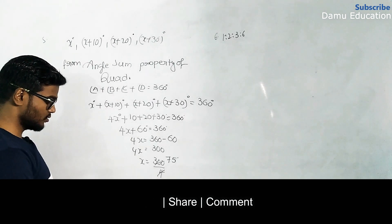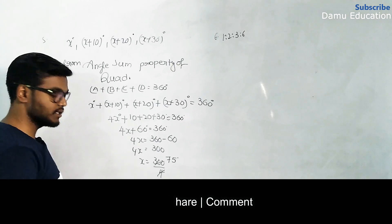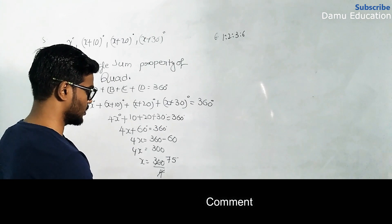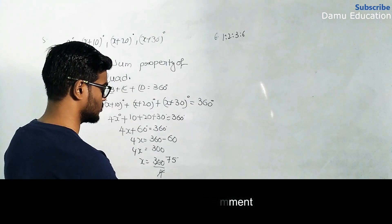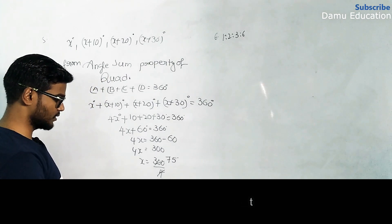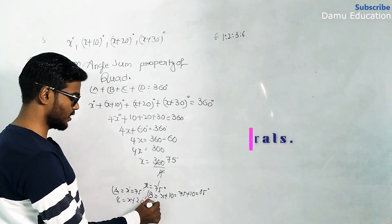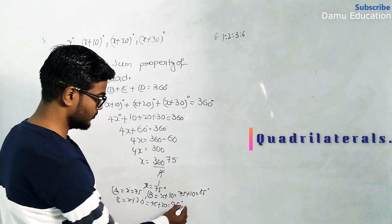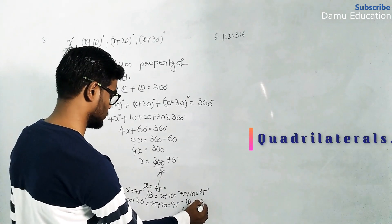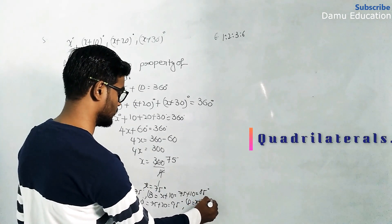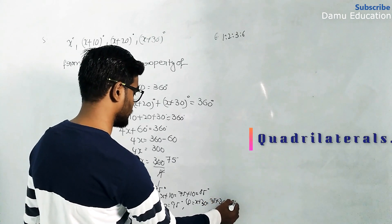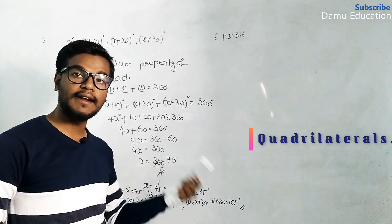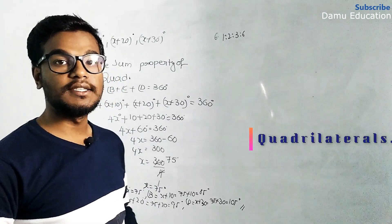So the angles are: angle A equals x degrees, which is 75 degrees. Angle B equals x plus 10, that is 75 plus 10 equals 85 degrees. Angle C equals x plus 20, that is 75 plus 20 equals 95 degrees. Finally, angle D equals x plus 30, that is 75 plus 30 equals 105 degrees.